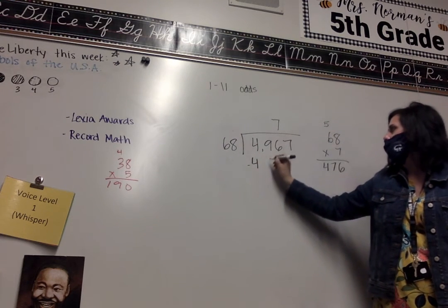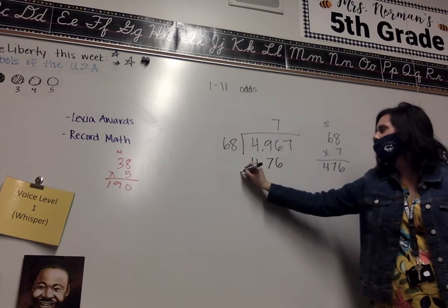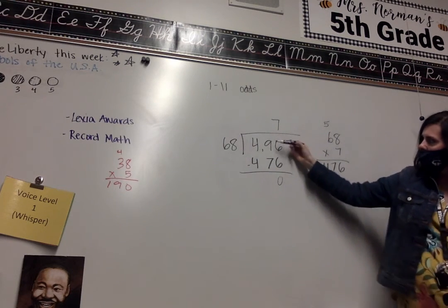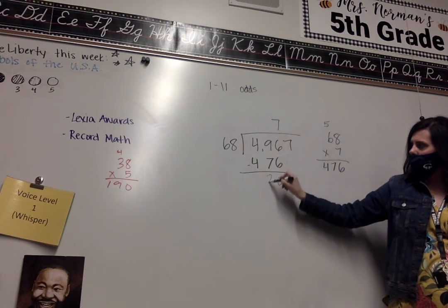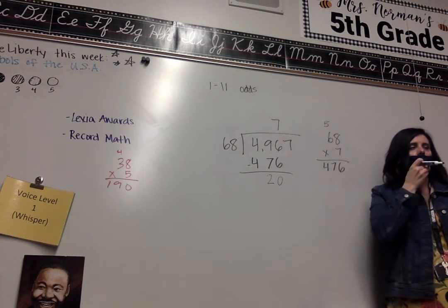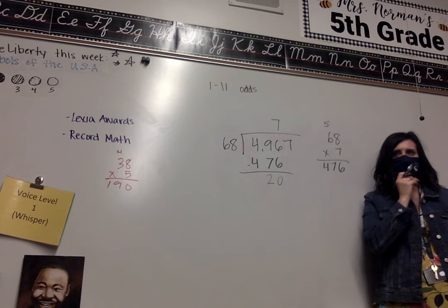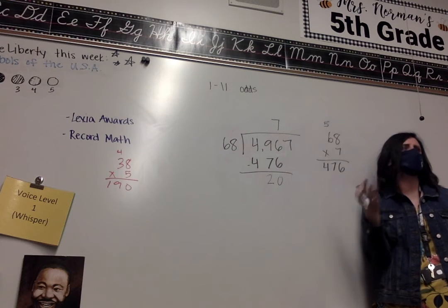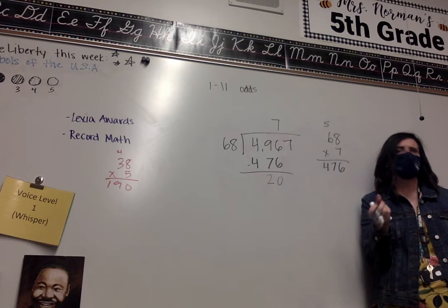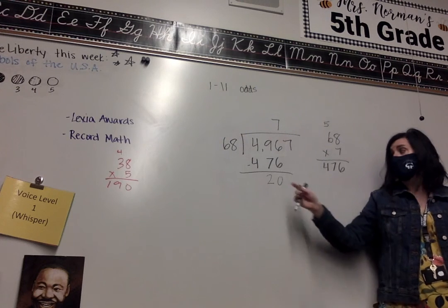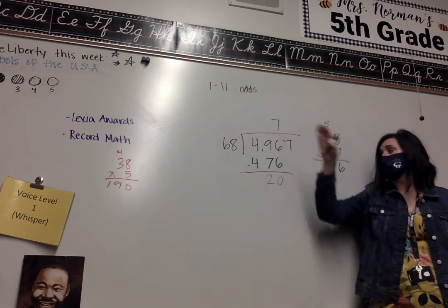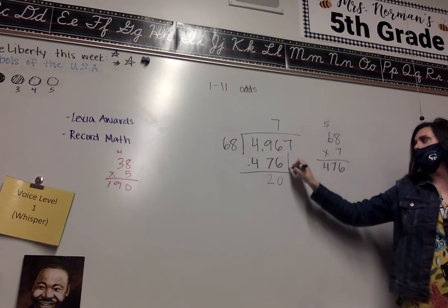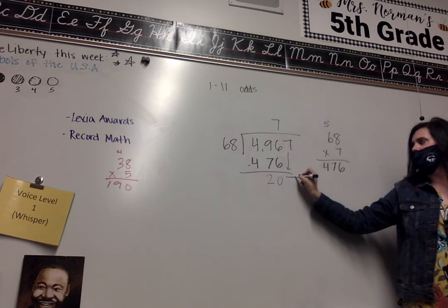So I'm going to do minus 476. Six minus six is zero. Nine minus seven is two. And four minus four is zero. It's like rounding technically. It's rounding. It really is. There is some guessing involved. Yes. Yeah. Okay. Well, 20 is less than 68, so my guess was a good one. We're good. Now we're moving on, and we're bringing down the seven.